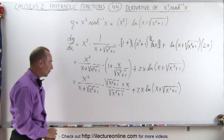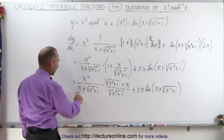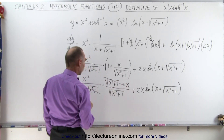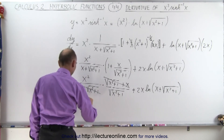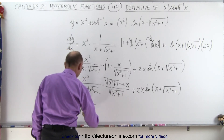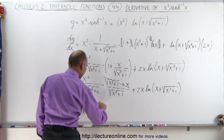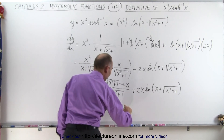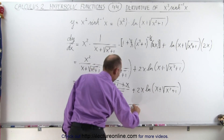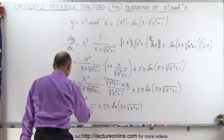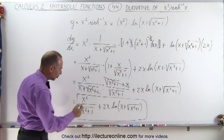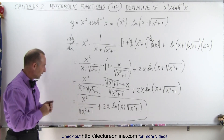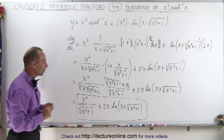Can we simplify anything? Yes, we certainly can. Notice here we have x plus the square root of x squared plus 1, and we have the same over here, so this cancels with this, which then leaves us with x squared divided by the square root of x squared plus 1, and then plus 2x times the natural log of x plus the square root of x squared plus 1. That looks like about as far as we want to go. You could probably write it in different formats, but that's a good one. So that's the derivative of our original problem.